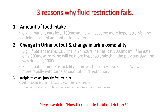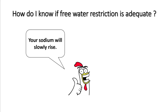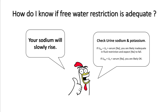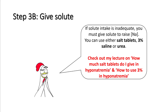You can check out how to calculate fluid restriction in my previous lecture. How do you know if your free water restriction is adequate? Your sodium should be slowly rising — that is a good indicator. However, you can check urine sodium and potassium: if the sum of these is more than serum sodium, fluid restriction is likely inadequate and sodium may fall. Along with water restriction, or if water restriction fails, you can give solute in the form of salt tablets or 3% saline. I have discussed the amounts and how to use 3% saline in a separate lecture.